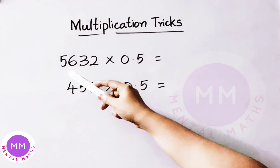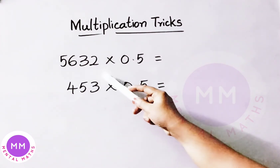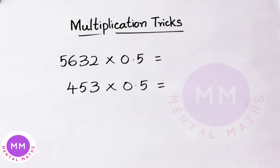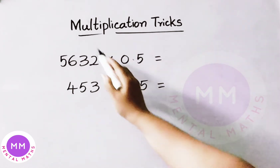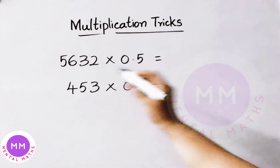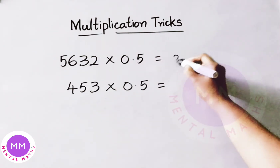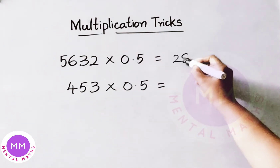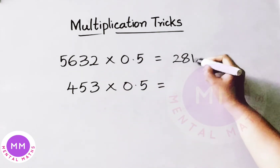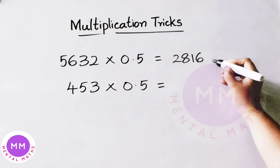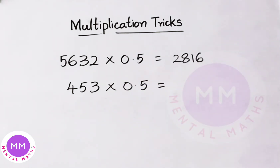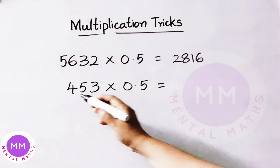See here the first one: 5632 multiplied by 0.5. How we shall multiply this quickly means, just divide this number by 2. 56 half is 28, 32 half is 16. So the answer is 2816.